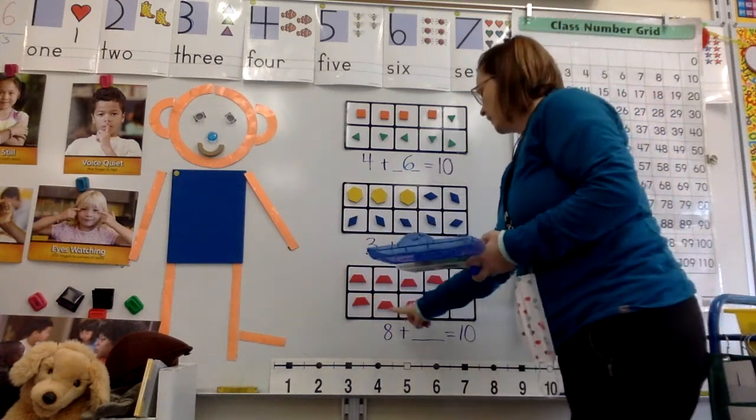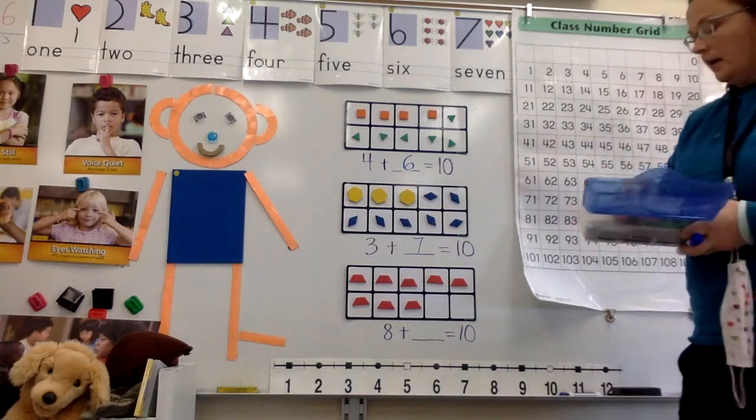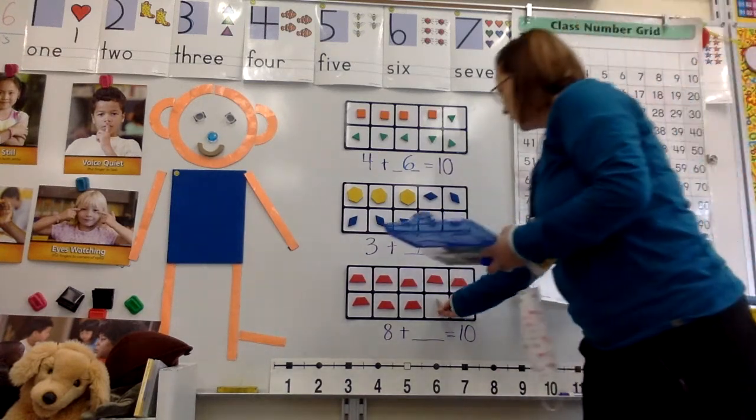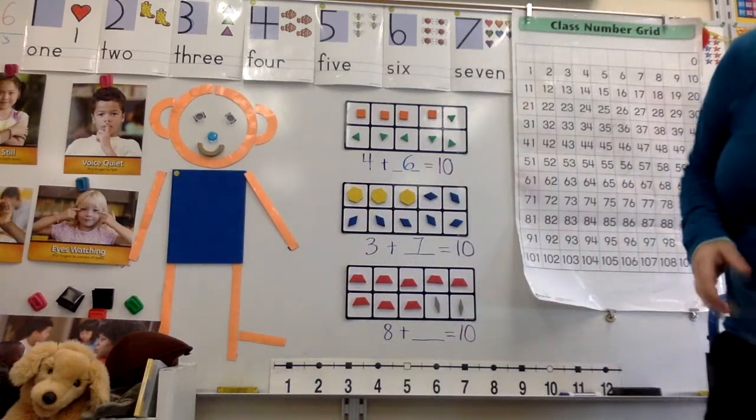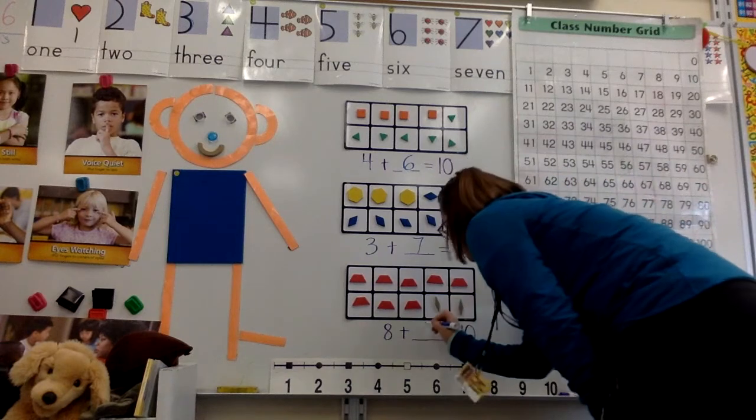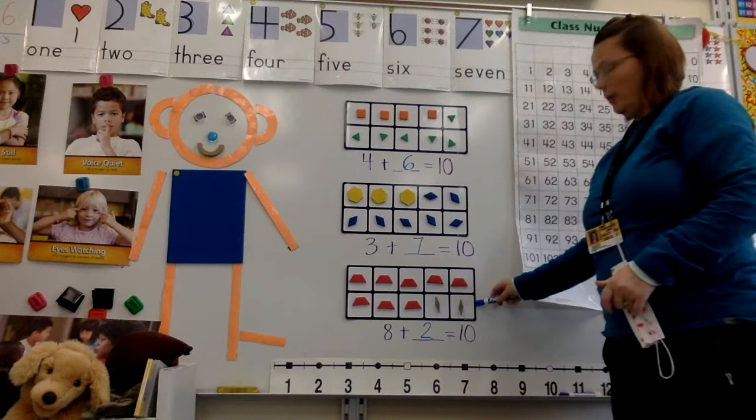Now I have one, two, three, four, five, six, seven, eight trapezoids here, and I have got to finish my sentence. So I'm gonna put one, and I'm gonna put two. And I can see that eight plus two equals ten. I can see eight and two make a group of ten.